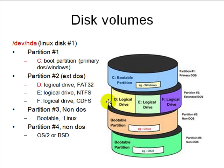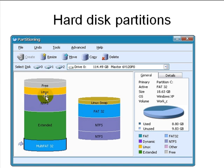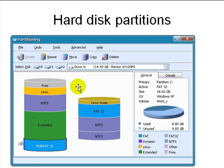Here you can see the boot partition for Windows, a D partition containing D, E, and F, a Linux boot partition, and other OS partitions like OS2 or BSD — which can be bootable or non-bootable. The BIOS normally boots to C:, so you need a boot loader to select what to boot into. The file systems shown include FAT32 (Windows XP, 16 GB), NTFS, Linux swap, and extended NTFS.